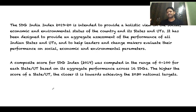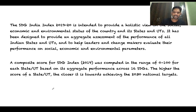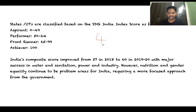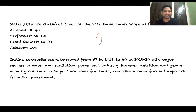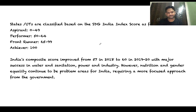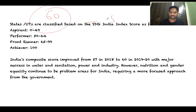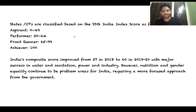A composite score between 0 and 100 is given to each state. Based on this score, states are classified into four categories: Aspirant (0–49), Performer (50–64), Frontrunner (65–99), and Achiever (100). Overall, India's score in the SDG India Index is 60, an improvement from 57 in the previous year. We have succeeded in areas like water and sanitation, power, and industry. However, nutrition and gender equality continue to be a problem.